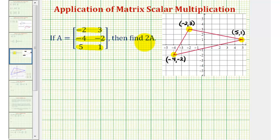Now we'll perform the scalar multiplication and see how it affects the coordinates of the vertices. To find 2 times matrix A, we multiply each element in matrix A by 2.